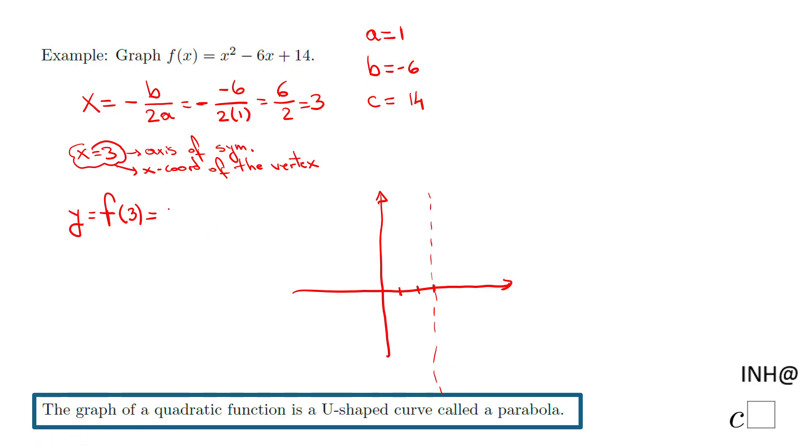And we have here 3 squared minus 6 times 3, let me be consistent, use these parentheses even though we don't need them, plus 14. And we have here what? 9 minus 18 plus 14. So how much is that? 9 minus 18 is negative 9, plus 14, I think that is positive 5.